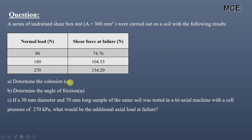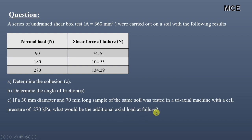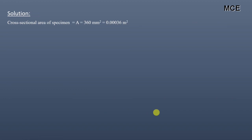We need to determine the cohesion, determine the angle of friction, and if a 30 mm diameter and 70 mm long sample of the same soil was tested in a triaxial machine with a cell pressure of 270 kilopascal, what would be the additional axial load at failure? The cross-sectional area of the specimen is given as 360 mm squared, or 0.00036 meter squared.